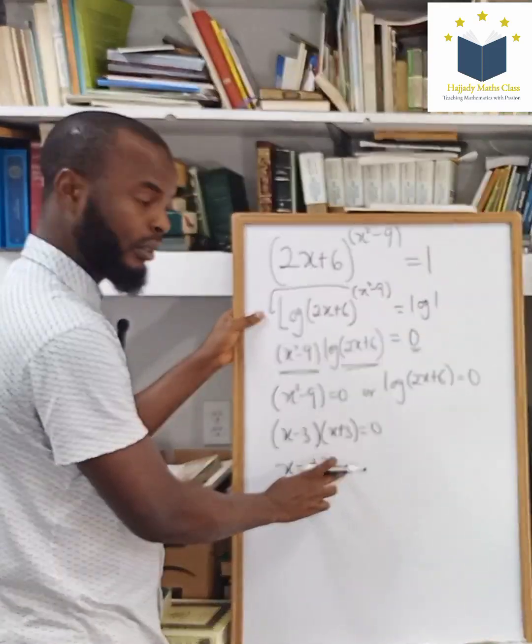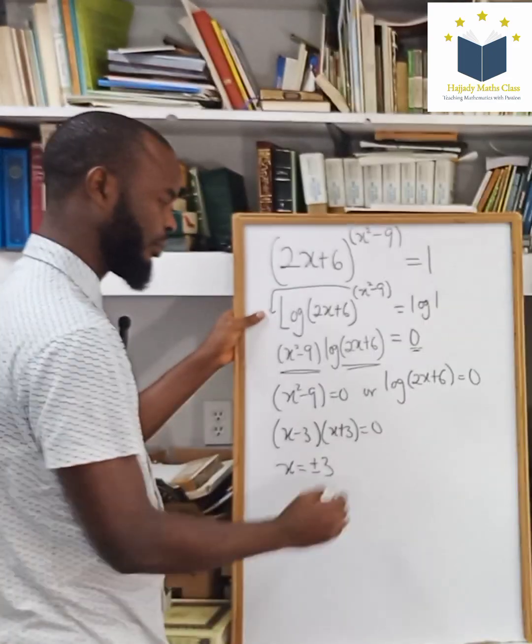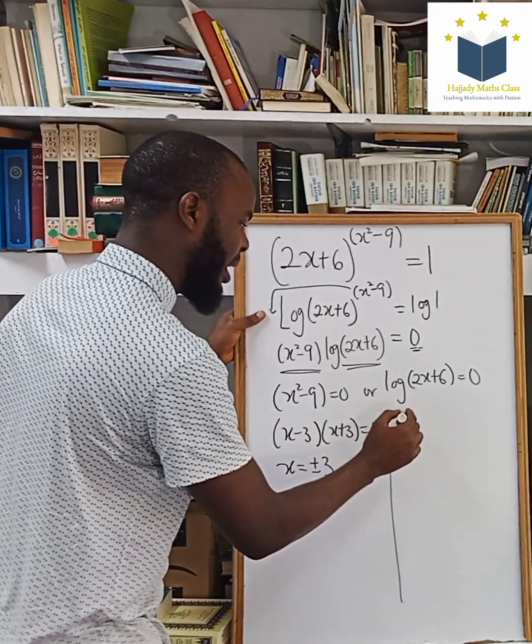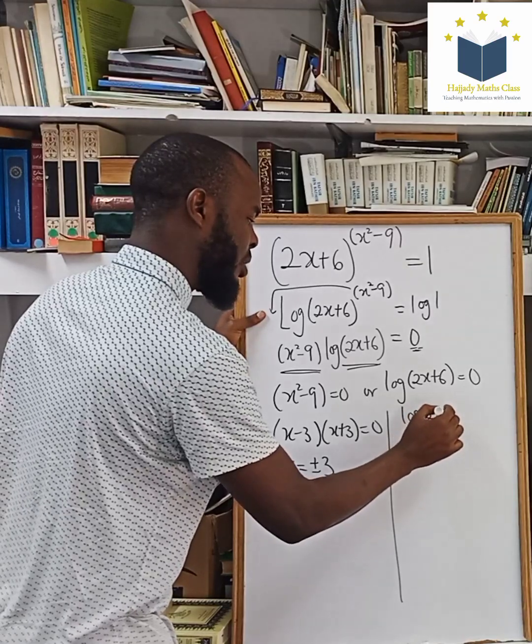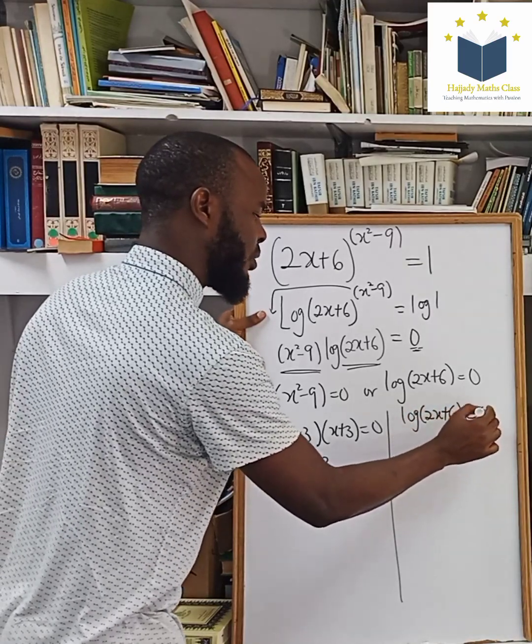That is for this. Now coming back here. Here I have log 2x plus 6 equals to 0.